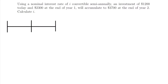For our second and final example: using a nominal interest rate of I convertible semi-annually, an investment of $1,200 today and $2,300 at the end of year one will accumulate to $3,700 at the end of year two. Calculate I, the nominal interest rate. We have a timeline drawn because we have more than one transaction: an initial investment of $1,200, a second investment of $2,300 at the end of year one, and a future value of $3,700 at the end of year two.